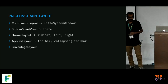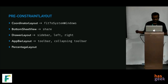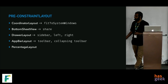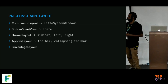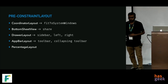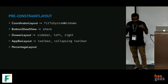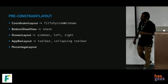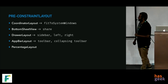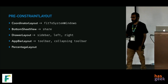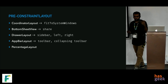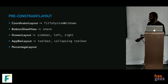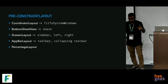Later on, as the challenges of the mobile industry increased and new design concepts were coming in, Android came up with coordinator layout that would actually allow you to fit the app in the safe area between the status bar and the bottom navigation. There is bottom sheet view for share sheets, drawer layout for a sidebar from left or right, app bar layout with a collapsing toolbar that enables a parallax effect, and percentage layout where you can define view widths as percentages.